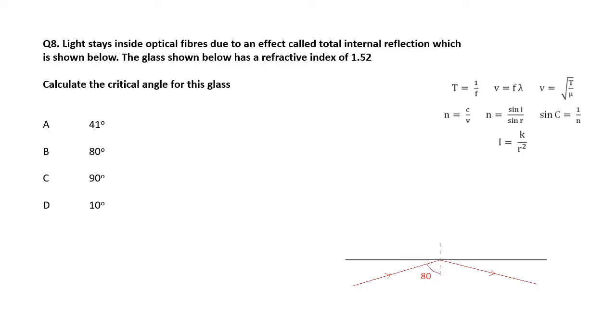Here we do have total internal reflection. We're told the refractive index is 1.52. Work out the critical angle for this glass. We're going to use this equation here. Sine C equals 1 over N. So to get the critical angle, C equals sine to the minus 1 of 1 over 1.52. And if you work that out on your calculator, you will get 41 degrees. This is just GCSE maths. If you can't do it, it's probably because you've forgotten it and you need to revise it. It's not A-level maths. You should be able to do this.